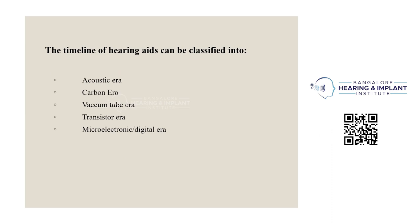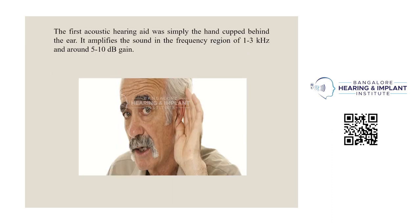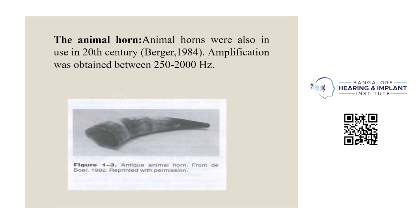The timeline of hearing aids can be classified into the acoustic era, carbon era, vacuum tube era, transistor era, and micro-electronic or digital era. The first acoustic era hearing aid was simply the hand cupped behind the ear, which amplified sound in the frequency region of 1 to 1.3 kilohertz with around 5 to 10 dB gain. In 1984, Burger conducted a study about animal horns, which were also in use in the 20th century, providing amplification between 250 to 2000 Hz.